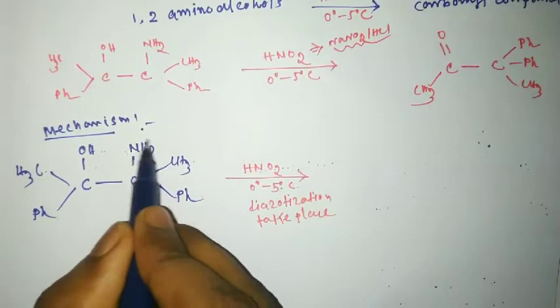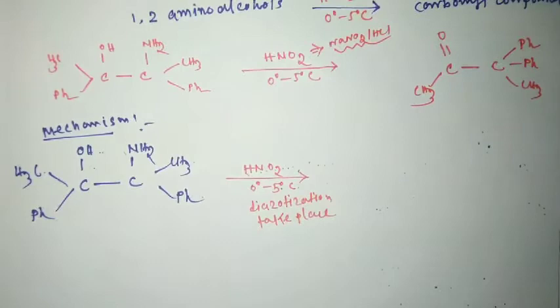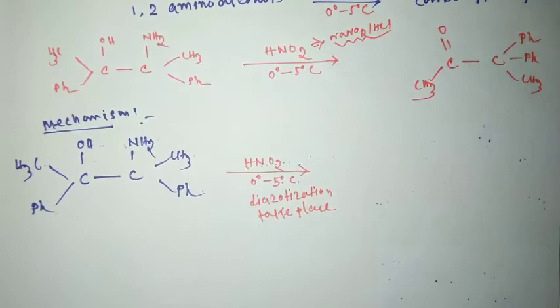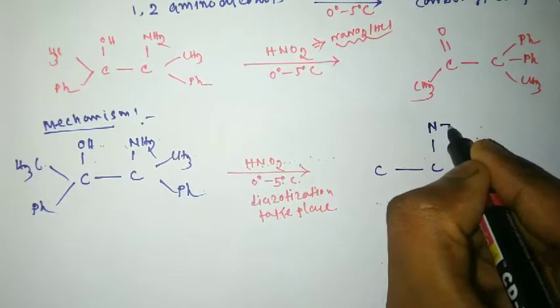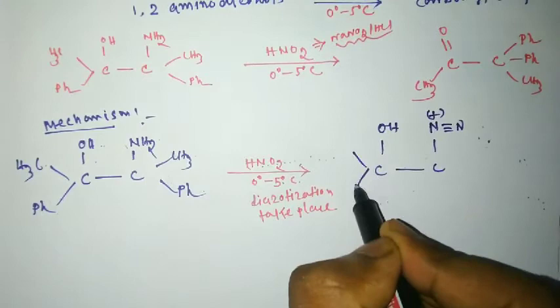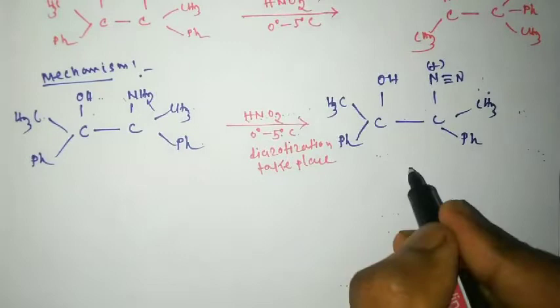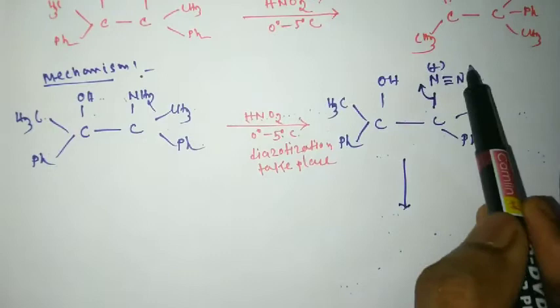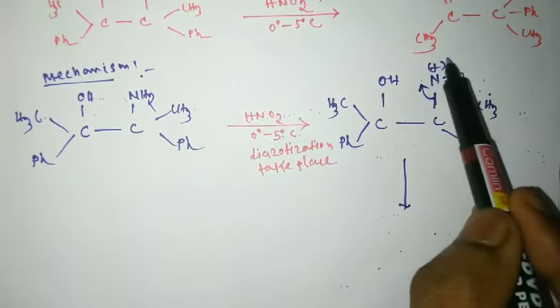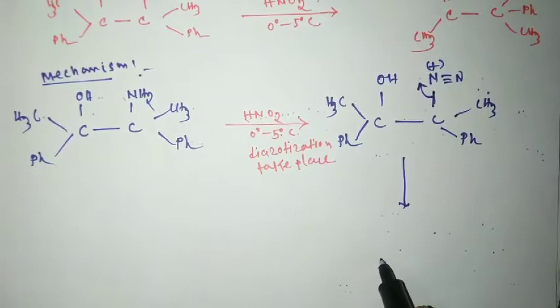The NH2 group reacts with HNO2, that is nitrous acid, and the diazonium salt forms. In the next step, this bond breaks and nitrogen is liberated as N2 gas. It is a good leaving group and a carbocation forms.